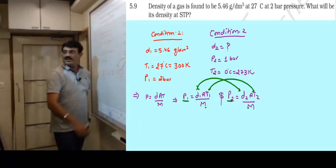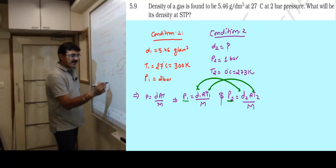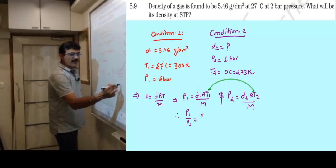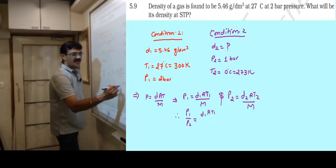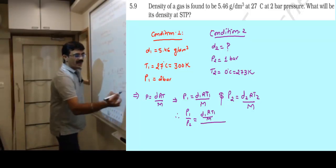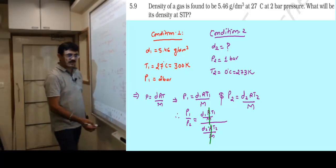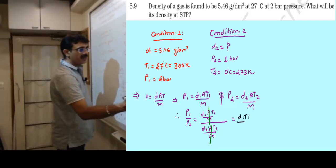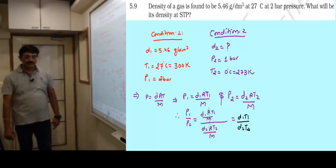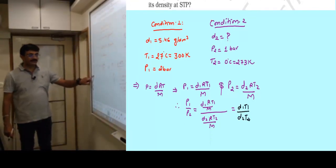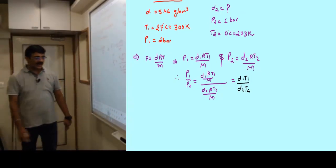If I divide the two equations: p1 by p2 equals D1 RT1 by M upon D2 RT2 by M. Since R and M are the same in both, they cancel out. This becomes D1 T1 upon D2 T2.